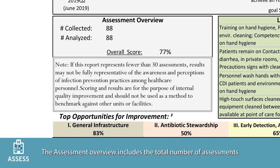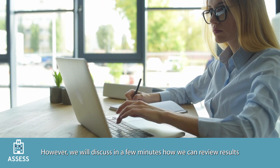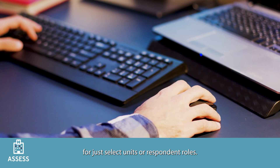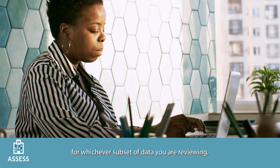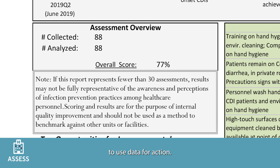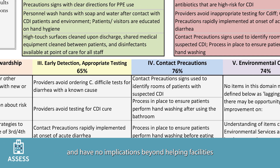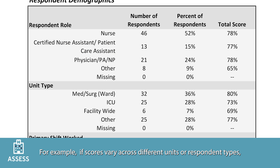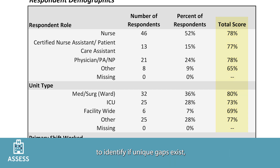The assessment overview includes the total number of assessments collected from the facility as well as the number included in the summary report. For the aggregate feedback report, these numbers will match. However, we will discuss how we can review results for just select units or respondent roles, where the number analyzed will be adjusted based on the subset of data being reviewed. This section also includes the overall score; the scoring methodology was created to provide another way to use data for action. Scores do not measure performance, should not be used to compare across facilities, and have no implications beyond helping facilities further target prevention efforts.